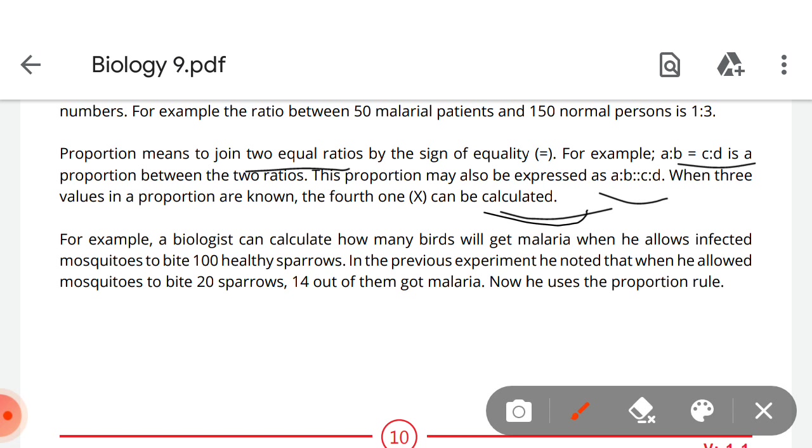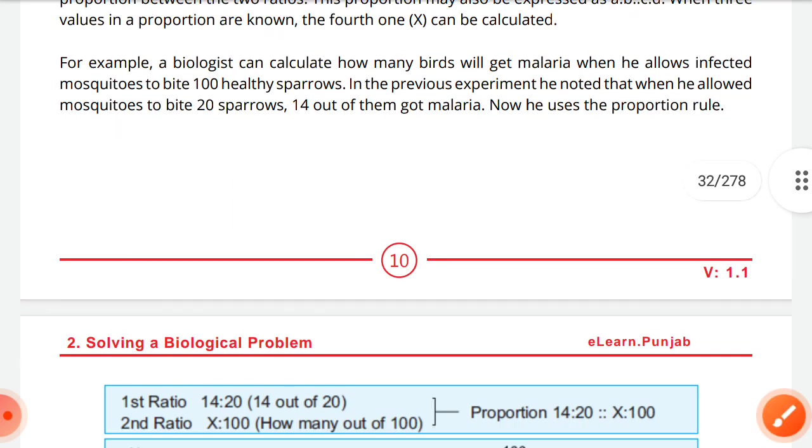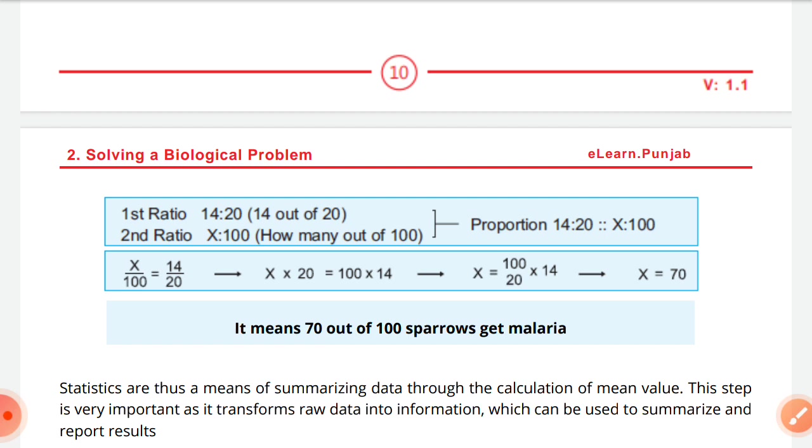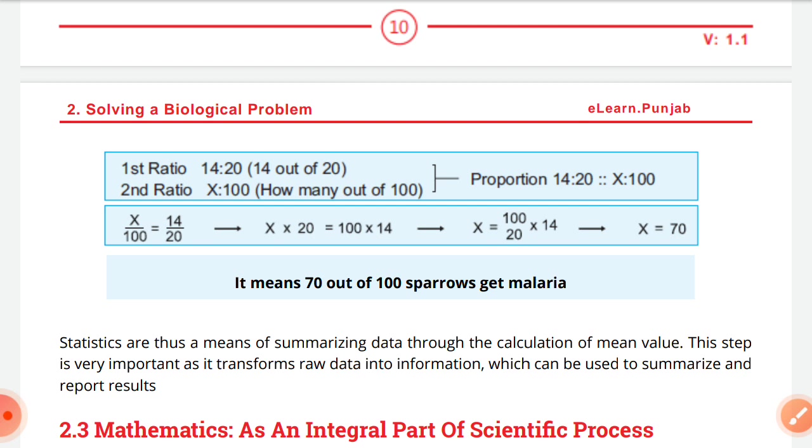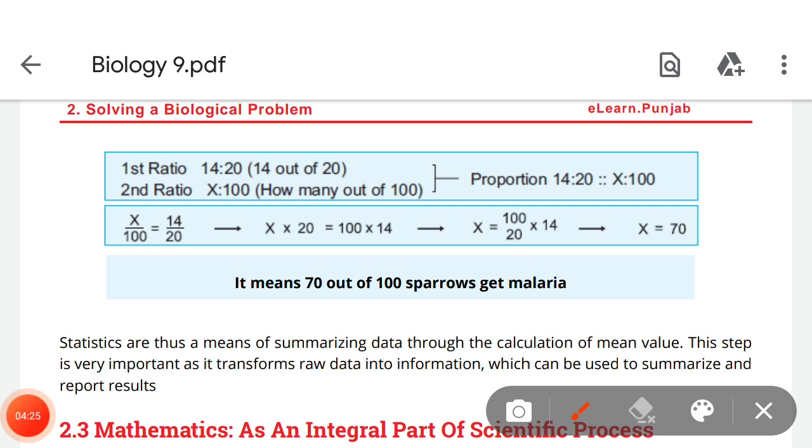For example, a biologist can calculate how many birds will get malaria when he allows infected mosquitoes to bite 100 healthy sparrows. In the previous experiment he noted that when he allowed mosquitoes to bite 20 sparrows, 14 of them got malaria. Now he uses the proportion rule: x/100 = 14/20. When we solve this, we will get that 70 sparrows are malarial infected. This is the advantage of stats and maths in biological problems.